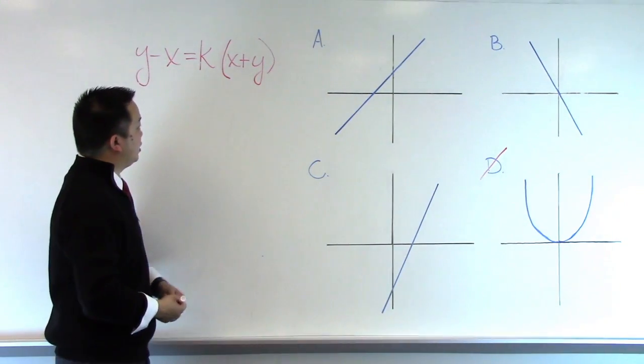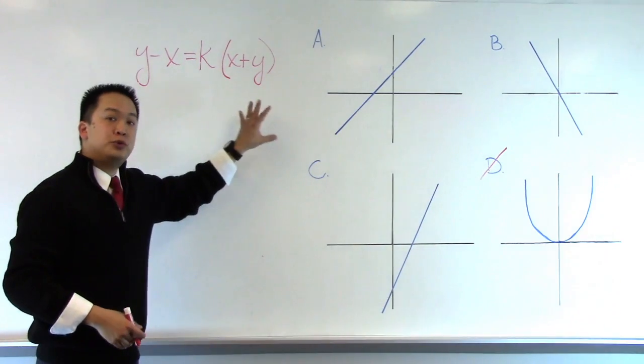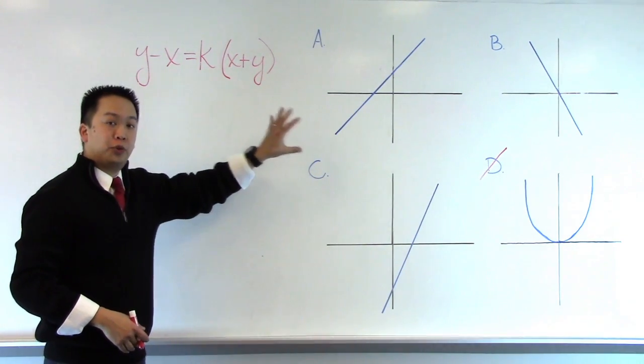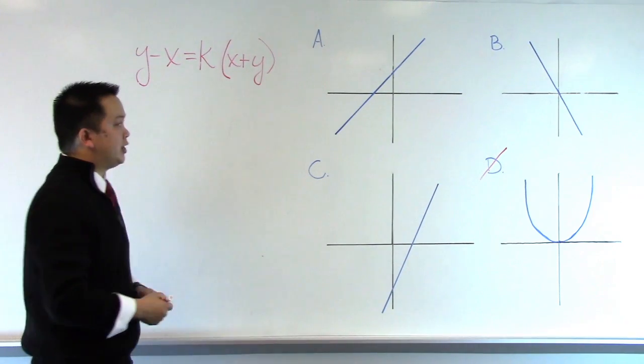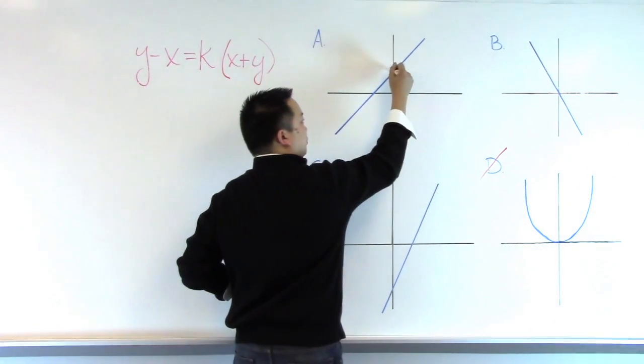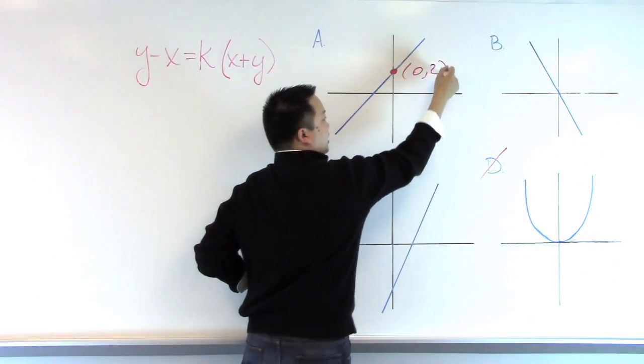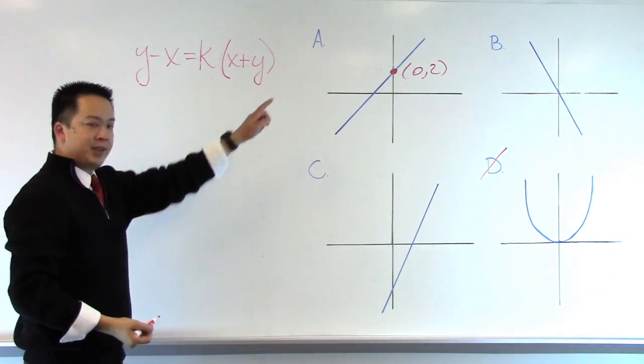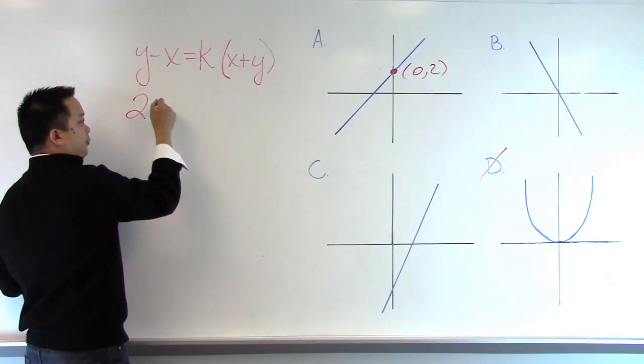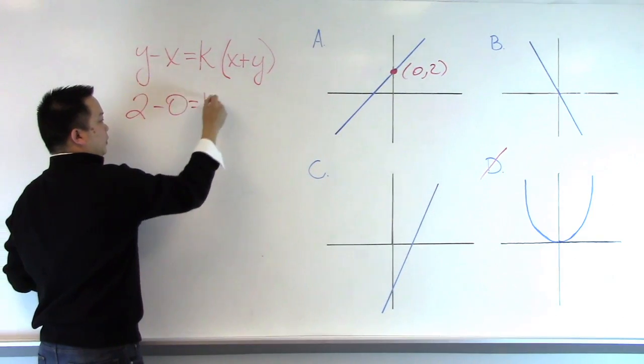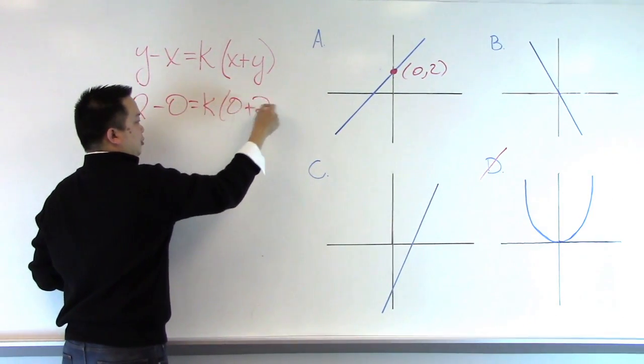For Princeton Review students, we understand that we'll use some data from the graphs and insert them into the equations. For example, let's take the ordered pair of 0, 2 that's representative of answer choice A. If I take my ordered pair 0, 2 and plug that into this equation, I would get 2 minus 0 is equal to k times 0 plus 2.